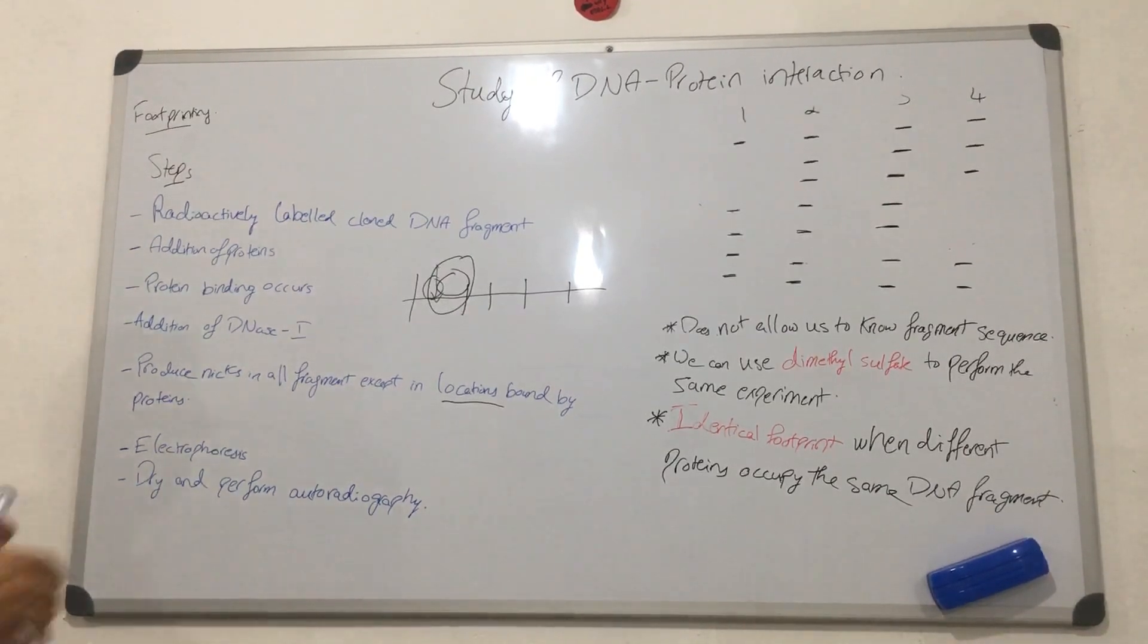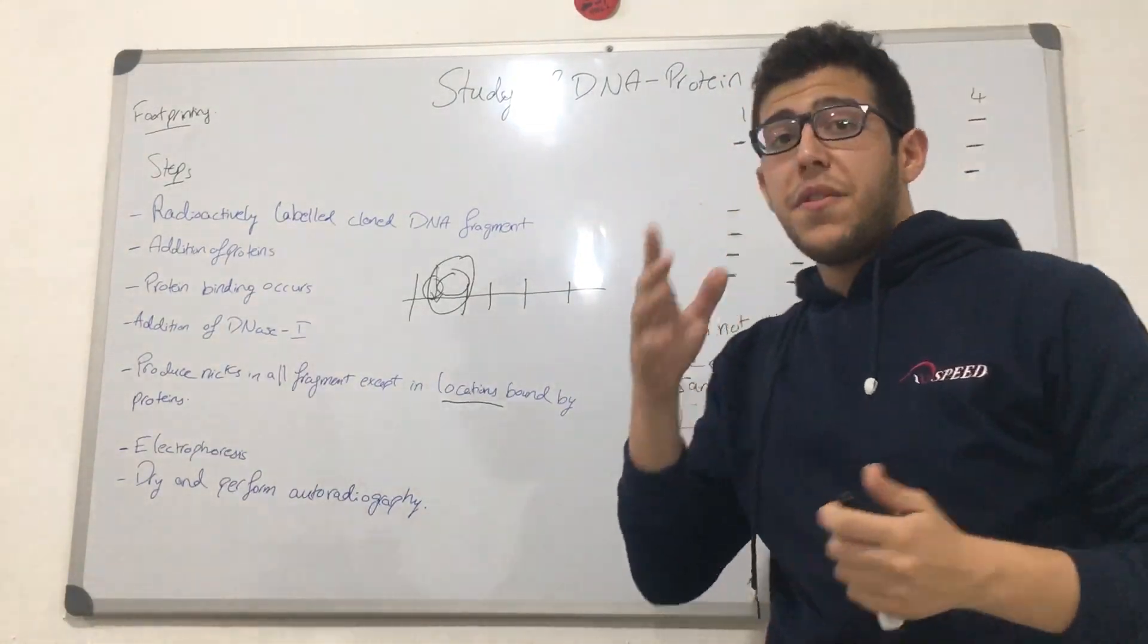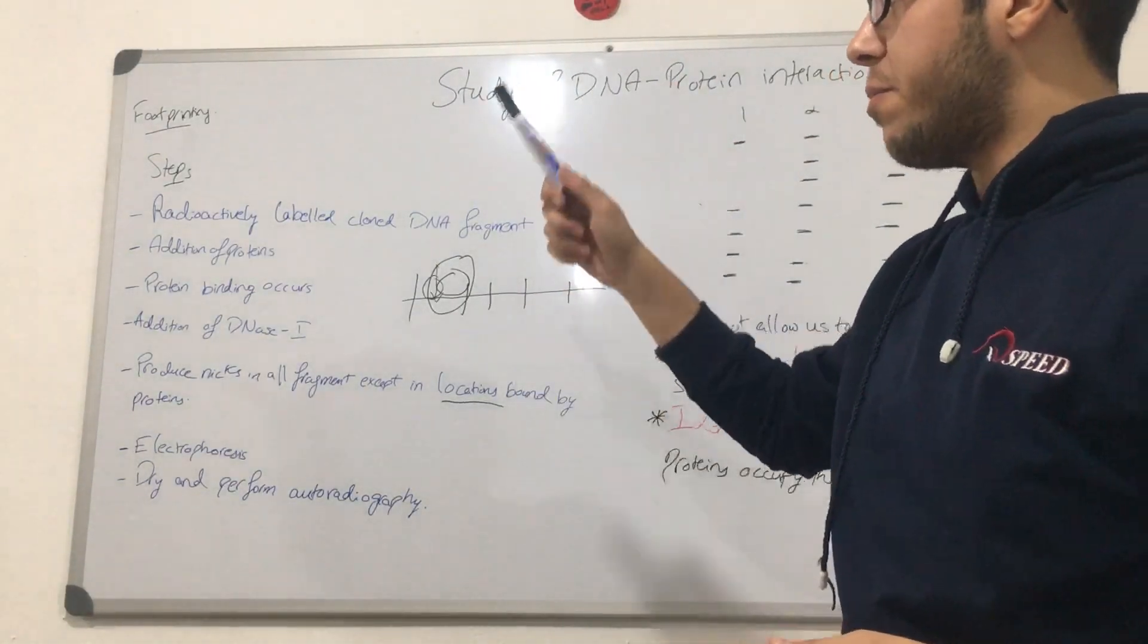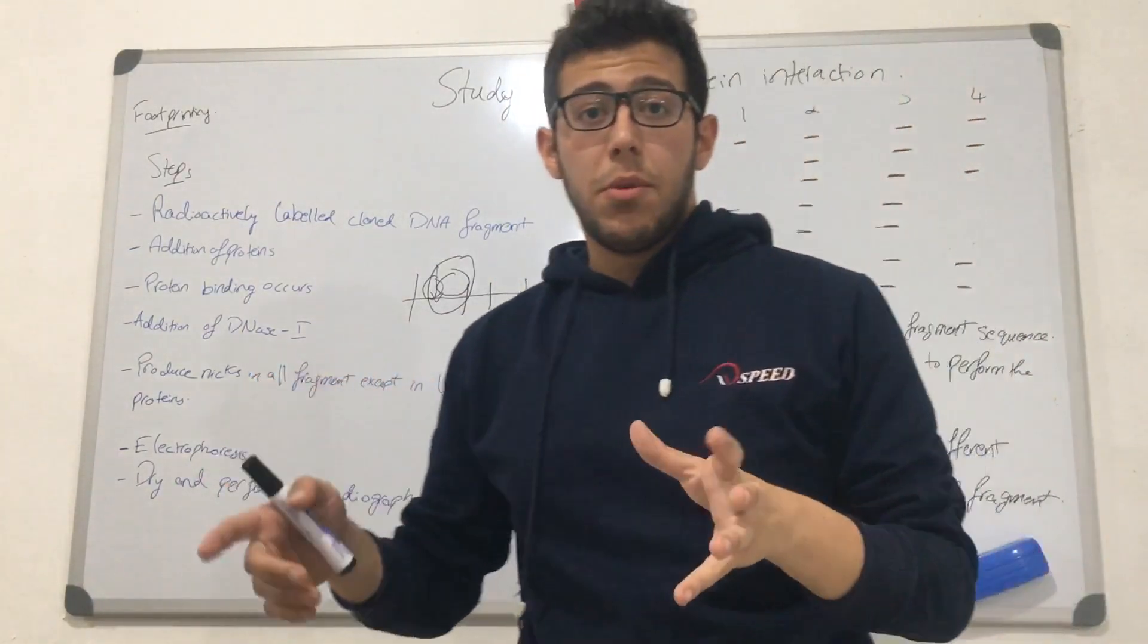During this lecture, we're going to be talking about methods to study DNA-protein interactions. The first method we're going to be talking about is footprinting, or DNA footprinting. The principle of this technique is pretty simple.